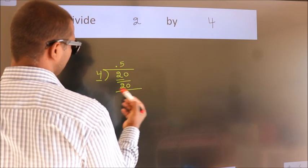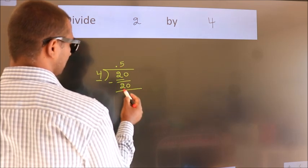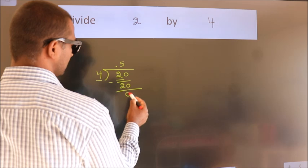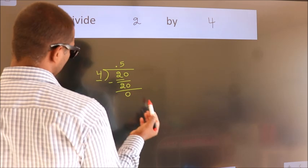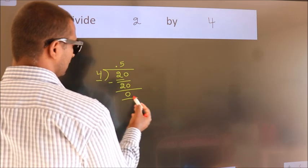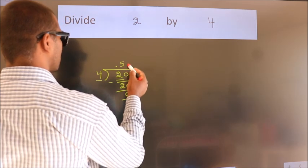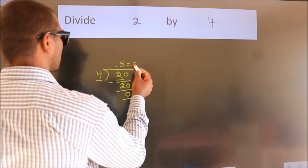Now we should subtract. We get 0. Now we got remainder 0, so this is our quotient.